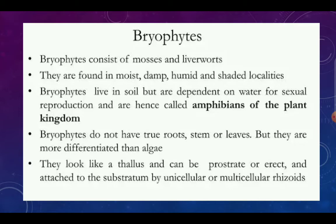Bryophytes do not have actual roots, stem, or leaves, but they are more differentiated than algae — one step further. Algae have no root-like, stem-like, or leaf-like parts at all; their whole body is green and contains chlorophyll, forming a thallus — a flattened organism that can be prostrate or erect. Bryophytes are attached to the substratum by unicellular or multicellular rhizoids.